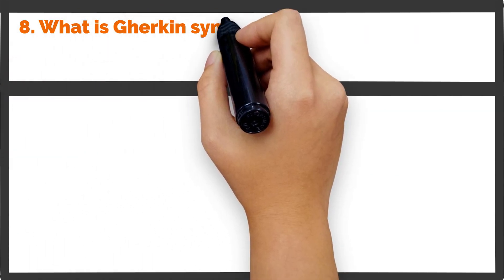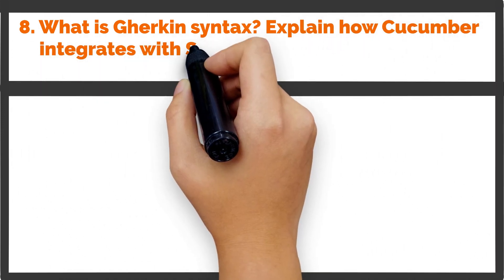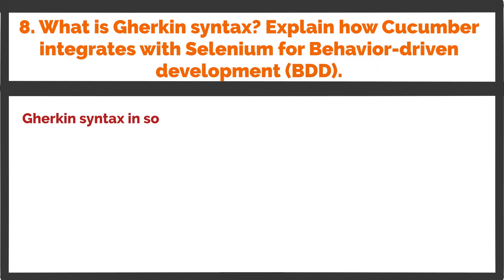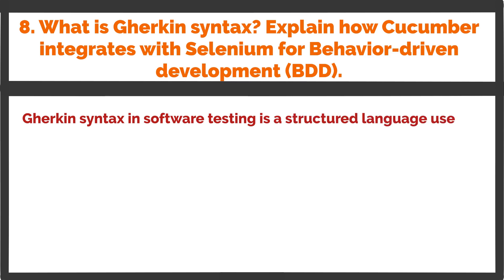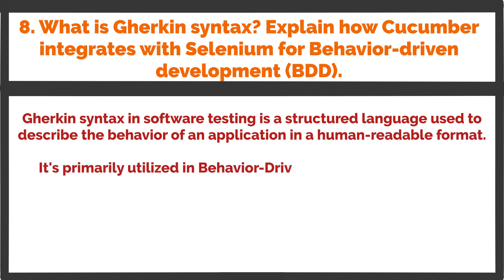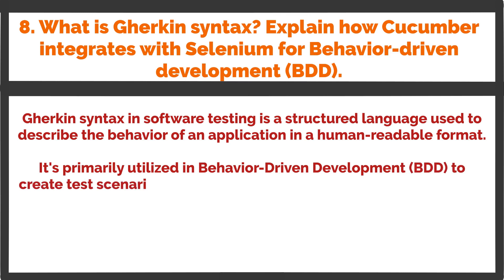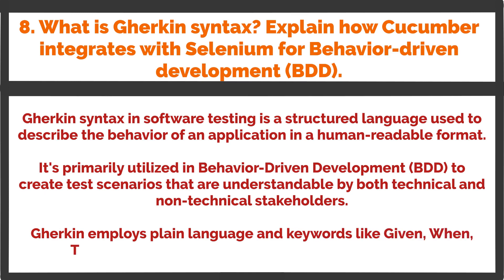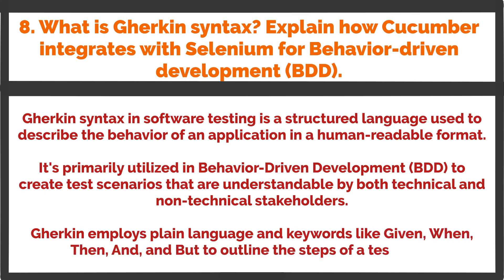Question 8: What is Gherkin syntax? Explain how Cucumber integrates with Selenium for behavior-driven development (BDD). Gherkin syntax in software testing is a structured language used to describe the behavior of an application in a human-readable format. It's primarily utilized in behavior-driven development (BDD) to create test scenarios that are understandable by both technical and non-technical stakeholders. Gherkin employs plain language and keywords like Given, When, Then, And, and But to outline the steps of a test case.